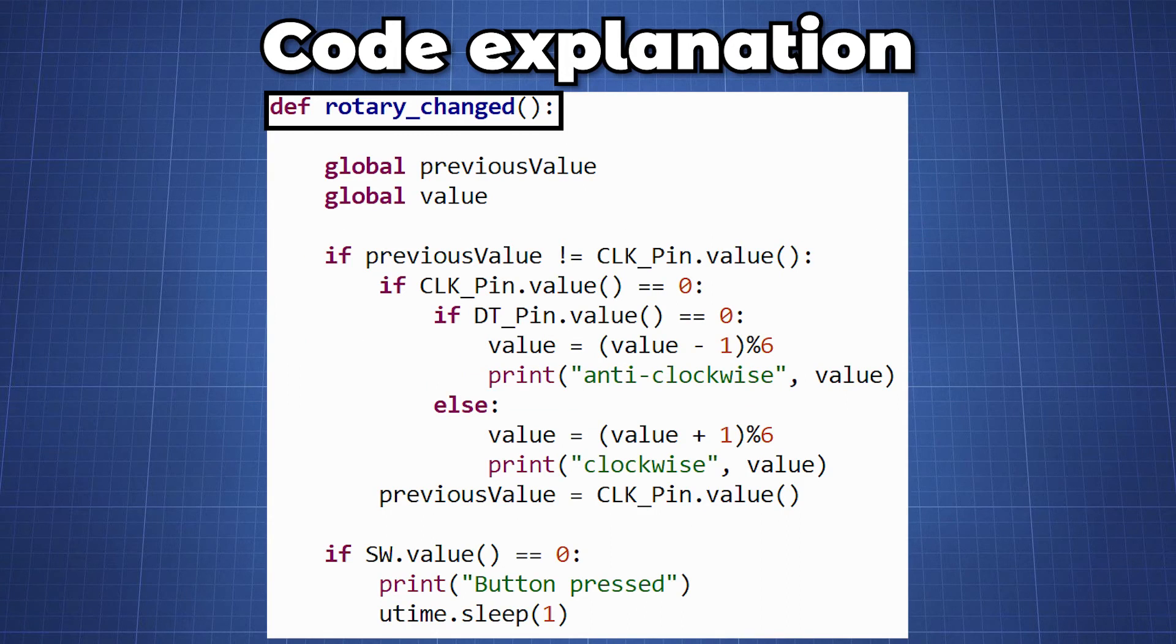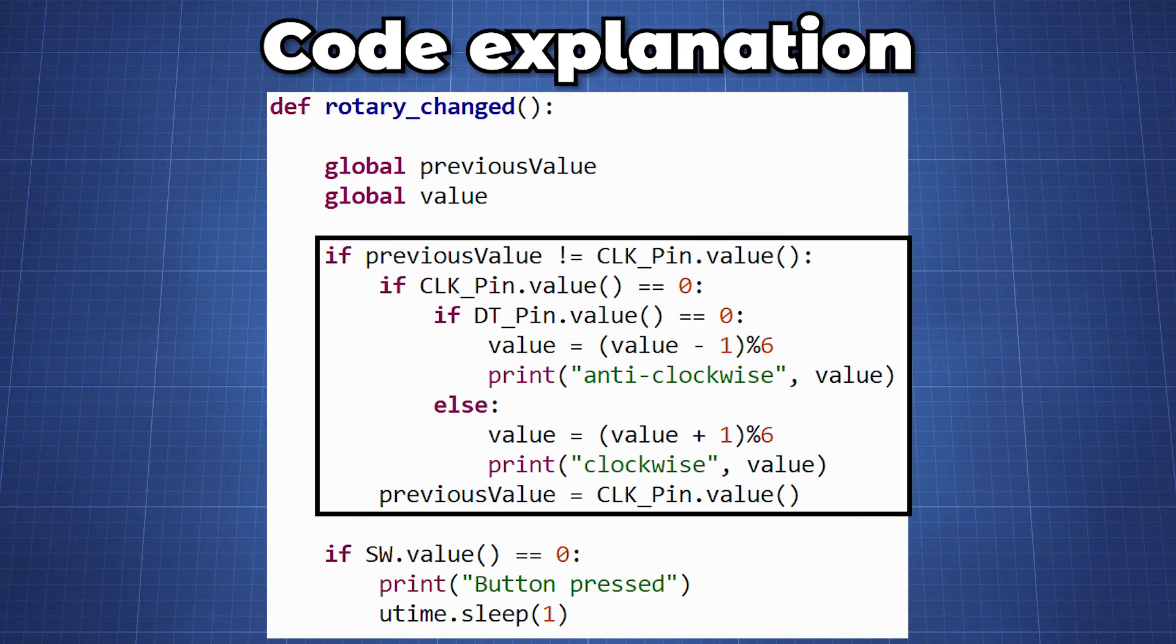We create a function rotary_changed to check if our rotary was turned clockwise or anticlockwise and update the value or if the push button was pressed. We set our previous value and value variable to the global variable and now we test for our first condition.